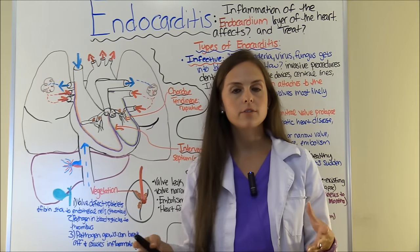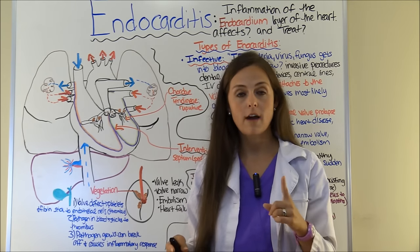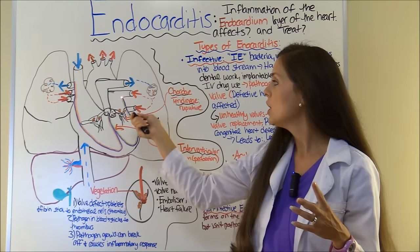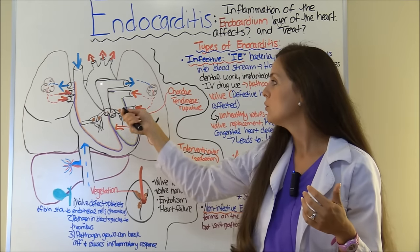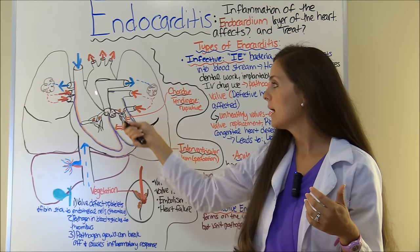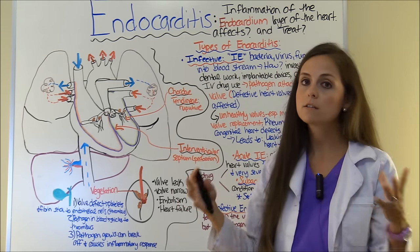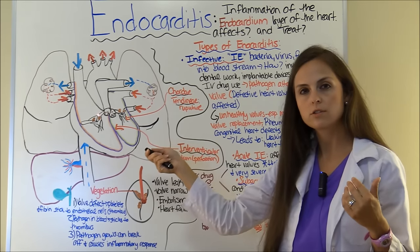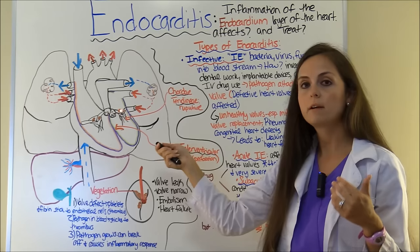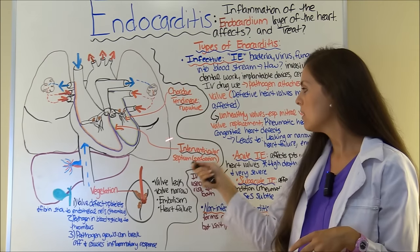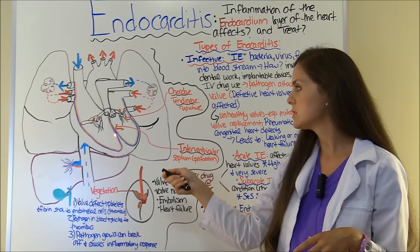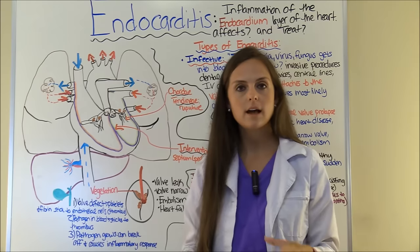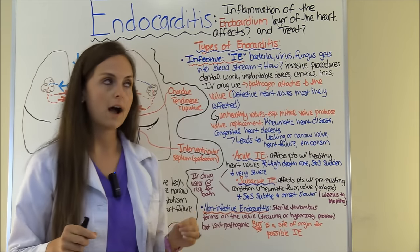Endocarditis can affect several things. It can affect your heart valves — you have four: your tricuspid valve, your bicuspid valve (also called mitral valve), your pulmonic valve, and your aortic valve. It can also affect your chordae tendineae, causing them to rupture — these are fibrous chords that attach your valve to the papillary muscle of the heart. It can also affect your intraventricular septum, but most likely endocarditis will affect your heart valves.